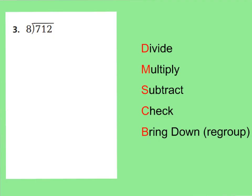Let's quickly review our steps for dividing with the traditional way. First you want to divide, then you're going to multiply, subtract, check, and then you're going to bring down to regroup. I like to remember this as: Does McDonald's Sell Cheeseburgers? That's a great way to remember it.